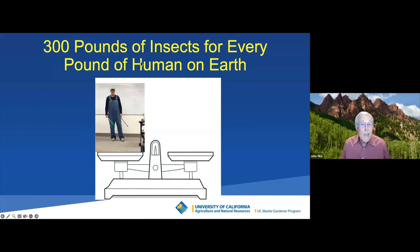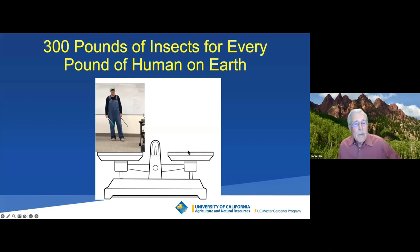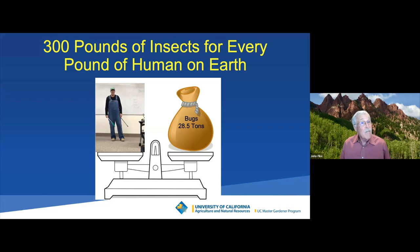Let's put it in a personal perspective. Here I am in my Farmer Bob outfit at a Master Gardener presentation. I'm on one side of a scale — how many insects am I worth, given this equation? The answer is 28.5 tons. I don't expect you to remember the numbers, but I want you to remember that there sure are a lot of them.